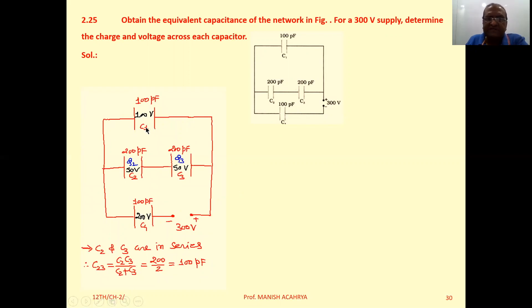Capacitor C1 has value 100 pF. Capacitors C2 and C3 are with values 200-200 pF. Capacitor C4 has 100 pF. Supply voltage is 300 volt.